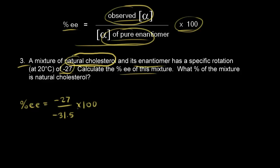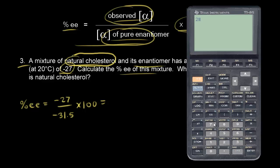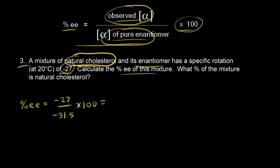So the percent enantiomeric excess equals negative 27 divided by negative 31.5, multiplied by 100. We don't need to worry about negative signs, so we take 27 divided by 31.5 and multiply by 100, giving us 85.7, which we round to 86%. So our percent enantiomeric excess is 86%.